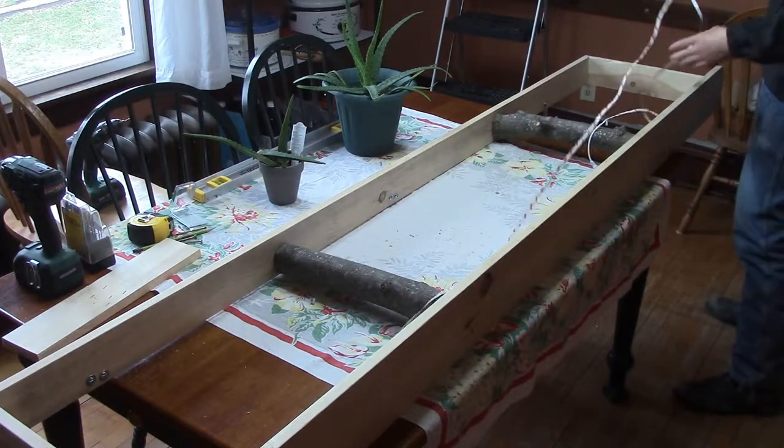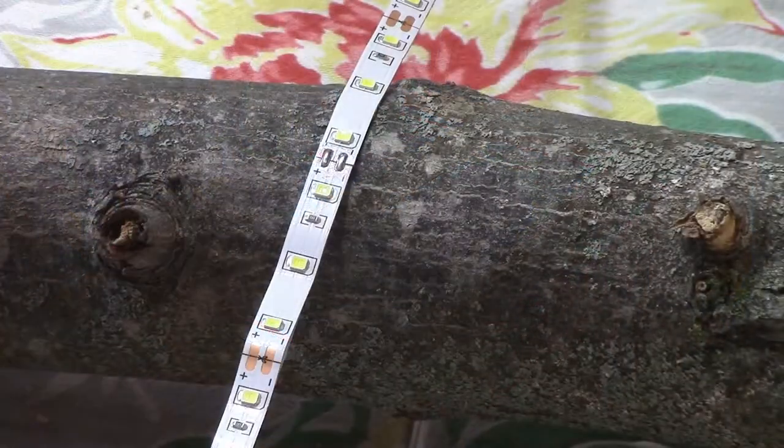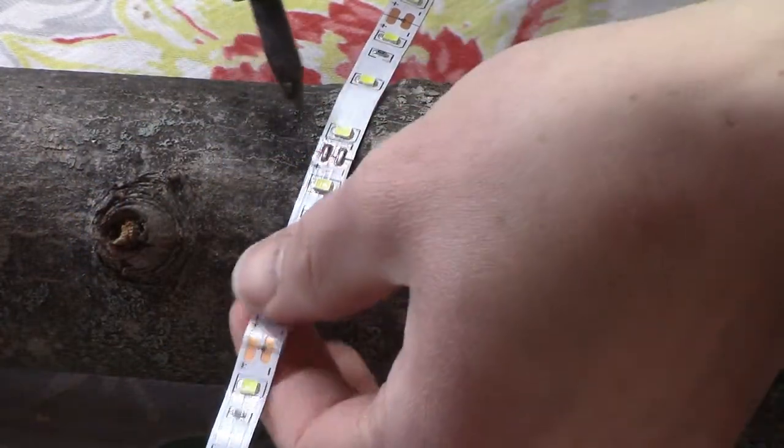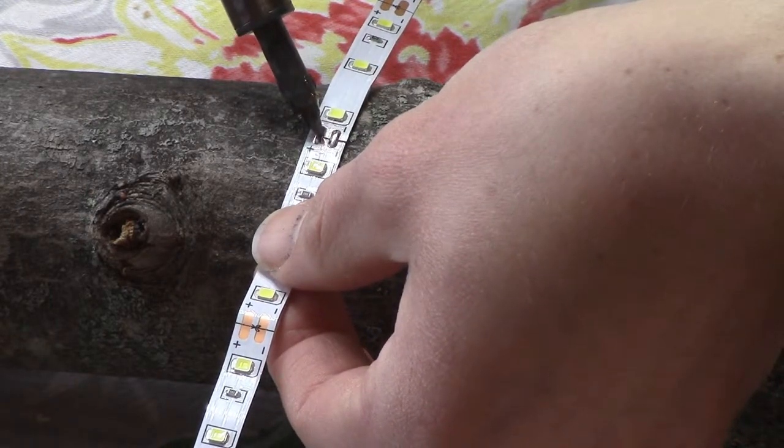There was a solder joint right in the middle of the strip, so I just unsoldered it. But these lights can be cut to length every few LEDs. In fact, in the video one such area is just below my thumb.